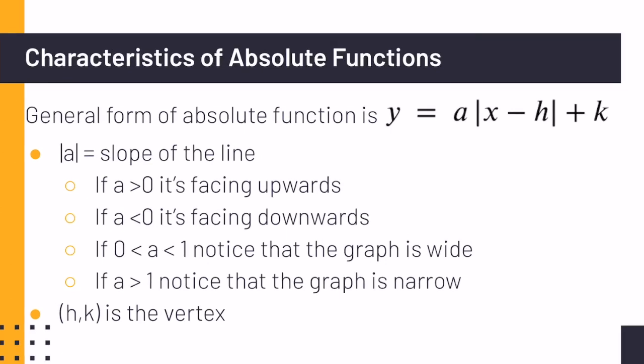Same as the quadratic function, if a is positive, it's facing upwards. If a is less than 0, then it is facing downwards. And if a is between 0 and 1, meaning it's like a fraction, then the graph is very wide. And if a is greater than 1, meaning like 2 or 3 and a half, then we will notice that the graph is narrow.